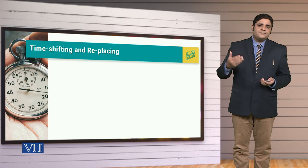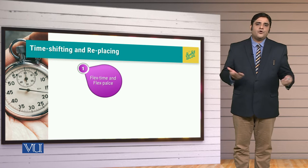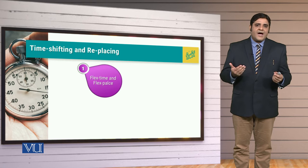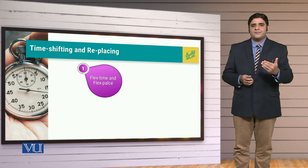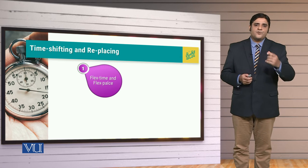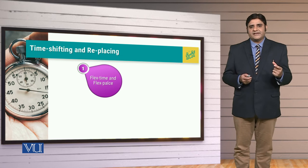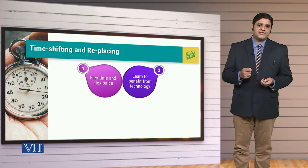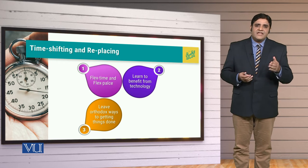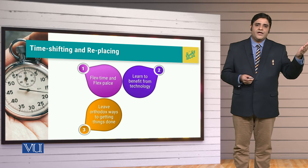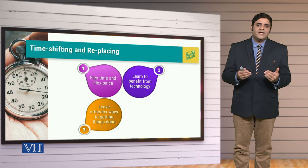At the same time, time shifting and replacing. For example, sometimes you may have to go for flex time and flex place perspective, in which you need to have flexibility in your matters. It may be that you can do all the work that the organization requires from home. It may be that you need time slots in which, according to different priorities, you have to deal with different stakeholders. At the same time, learn to benefit from technology because technology can make our life much easier. Also, leave orthodox ways — leave old thoughts and old matters behind, and come to new ways of getting things done. Because that creativity, that innovation is the requirement of the time.